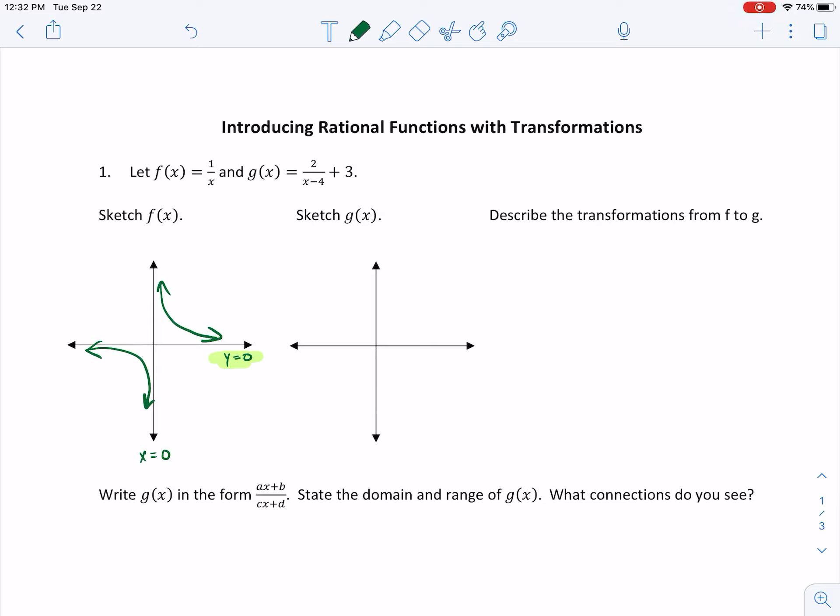Okay, so and then the next one, what we're going to do is we're going to compare the parent function to the transformations. So you'll notice that down here, that minus 4 is going to tell me, well, let's start up here, sorry. We have a vertical stretch of 2, and then we are going to shift to the right 4, and then this right here tells me that we're going to go up 3.